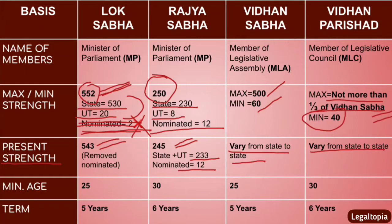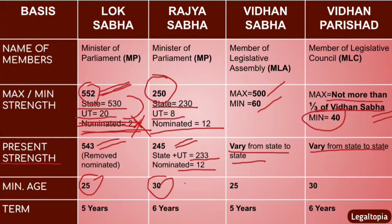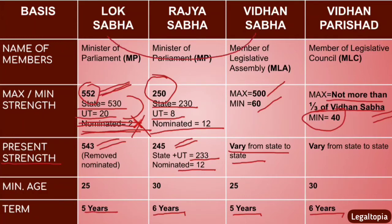Minimum age for Lok Sabha is 25, and for Rajya Sabha it is 30. Similarly, Vidhan Sabha's minimum age mirrors Lok Sabha, and Vidhan Parishat's minimum age mirrors Rajya Sabha. For term: Lok Sabha's term is 5 years, Rajya Sabha is 6 years, Vidhan Sabha is 5 years, and Vidhan Parishat is 6 years. Vidhan Parishat runs parallel to Rajya Sabha, and Vidhan Sabha runs parallel to Lok Sabha.